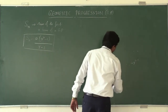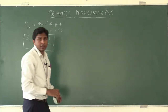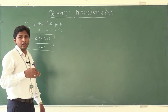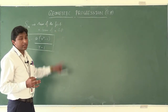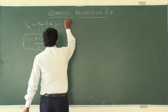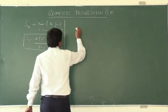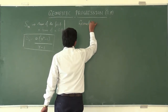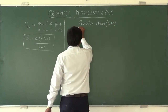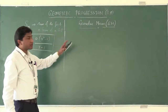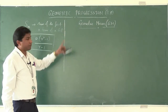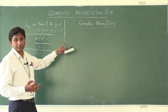The next concept: just like under AP we had arithmetic mean or AM, similarly here under geometric progression we have something called geometric mean or GM.